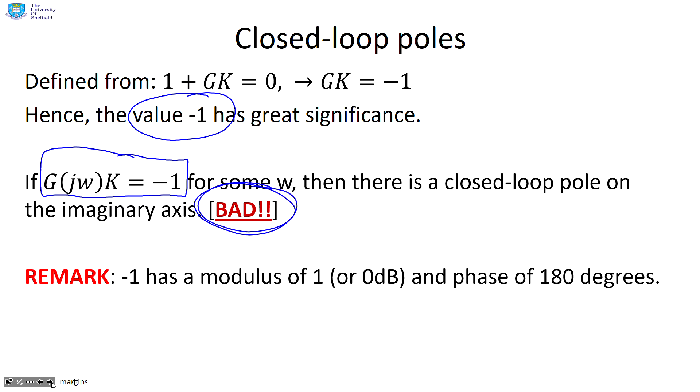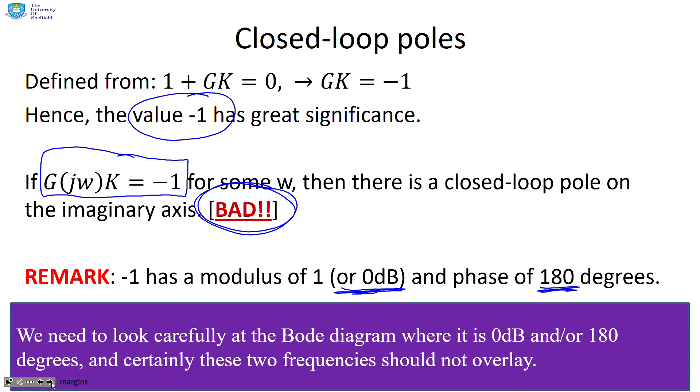So I do not want to be able to solve G of jω K equals minus 1. How do I recognize minus 1 in the Bode diagram? Minus 1 implies 0 decibels and 180 degrees. So we need to look carefully at the Bode diagram where it's 0 decibels and or 180 degrees. We certainly don't want the Bode diagram to be overlapping at those two points.